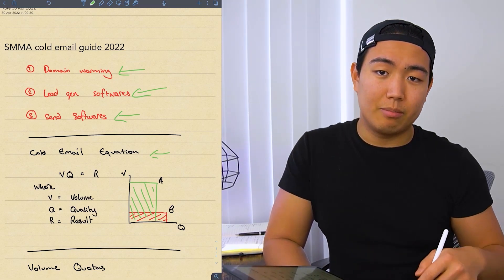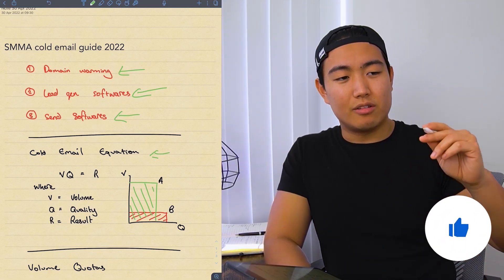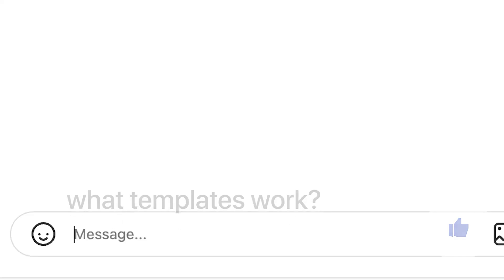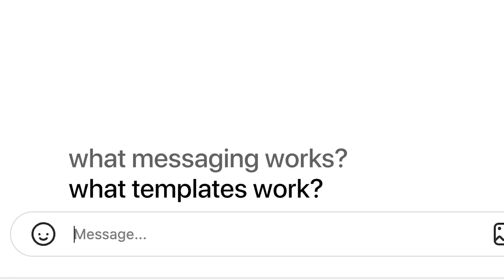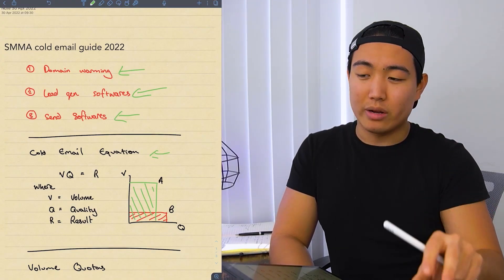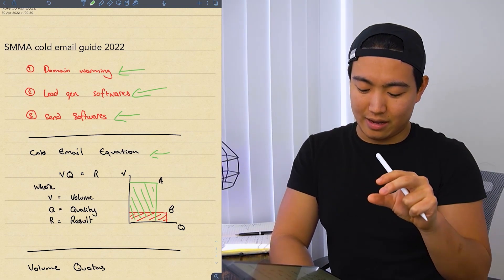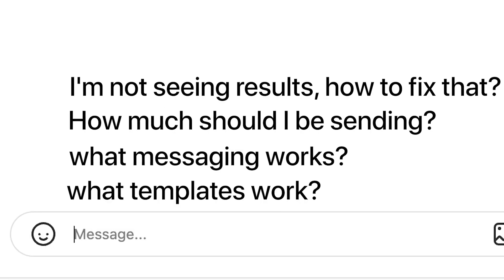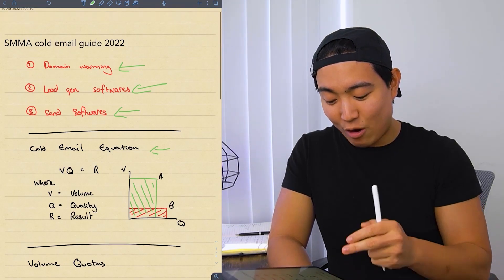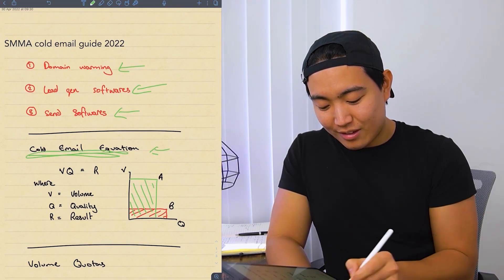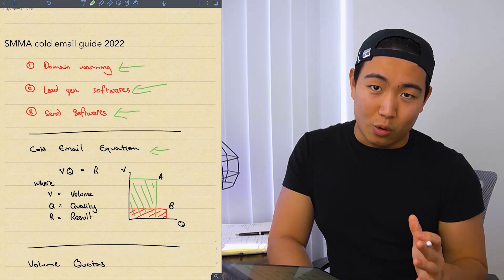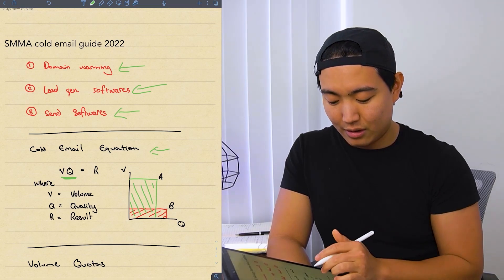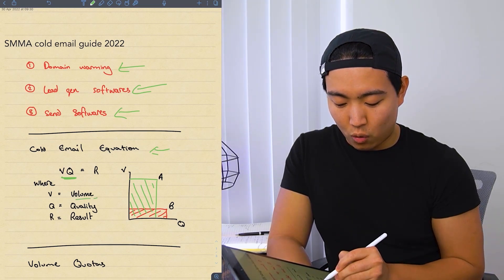We're going to be talking about the cold email equation because I feel like a lot of people get this wrong. Everyone that asks me about cold emails in my DMs is either asking what templates work, what messaging works, or some sort of variations about the quality of cold email. The second type of question I get is how much should I be sending? And actually there's a third question. It's like I'm doing cold emails but I'm not seeing results. How can you fix this? And it always comes back to this equation.